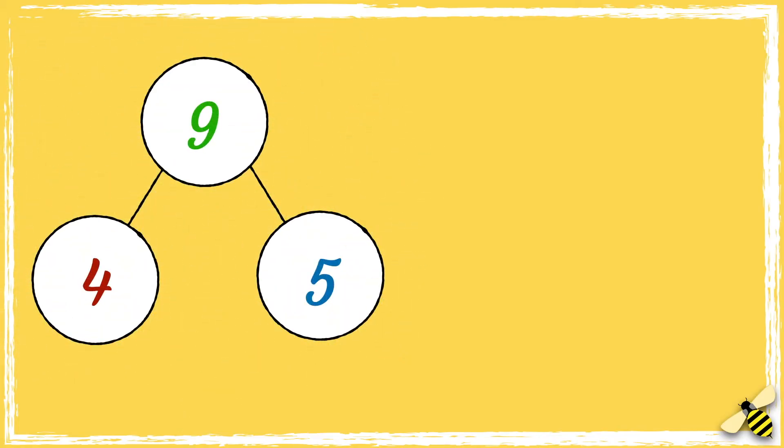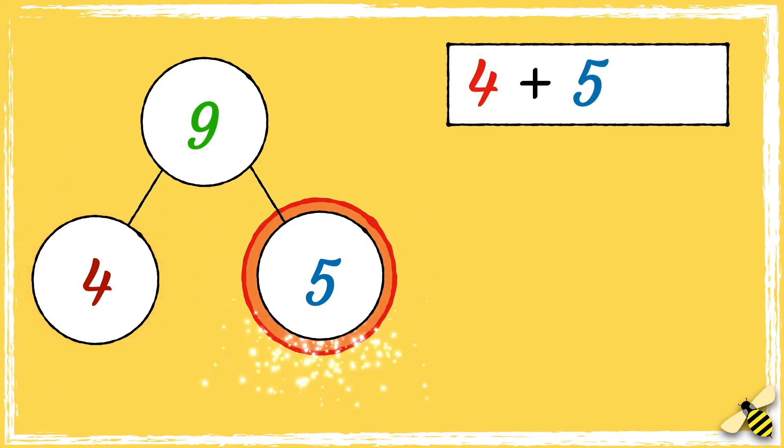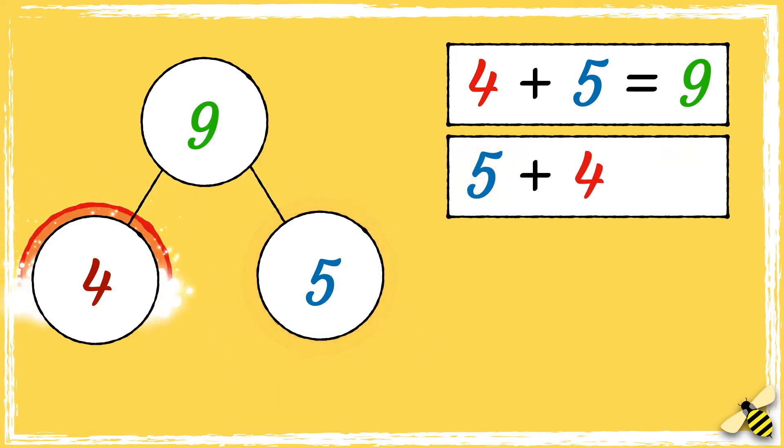Let's have a look at another fact family. This part-whole model shows that 4 add 5 equals 9. But we could also say that 5 add 4 equals 9.